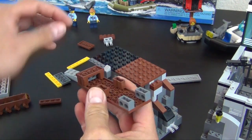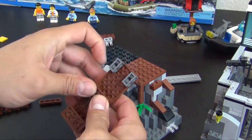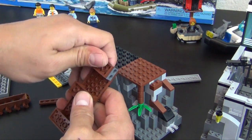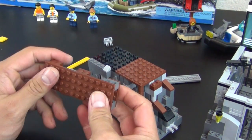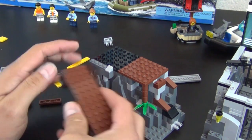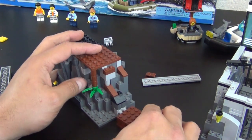All right, so this is a little dock area so they can transport prisoners to the island. It's kind of like an Alcatraz style prison island.